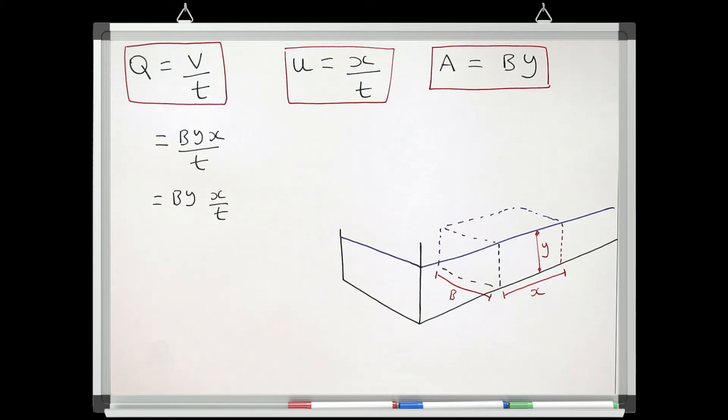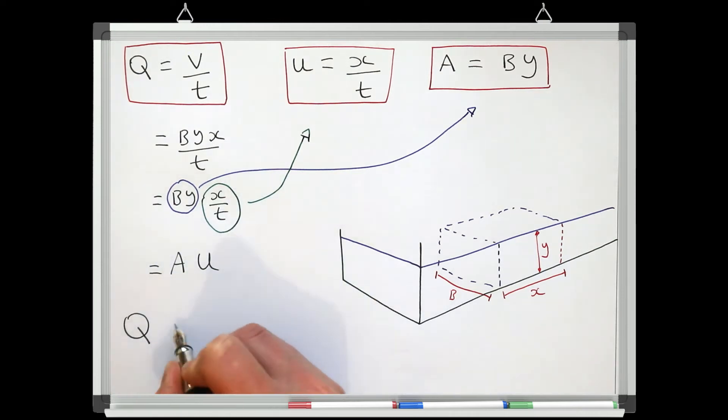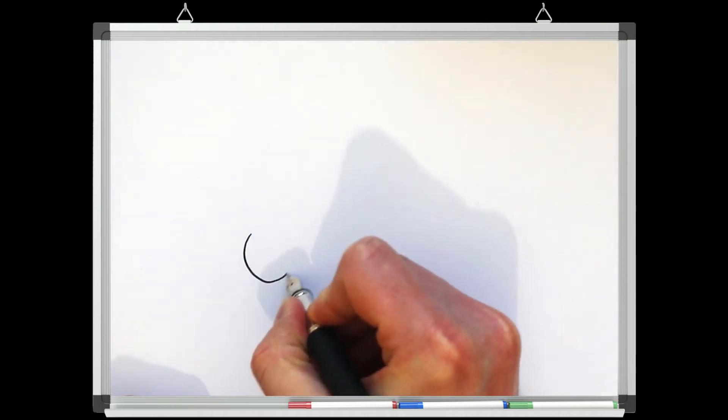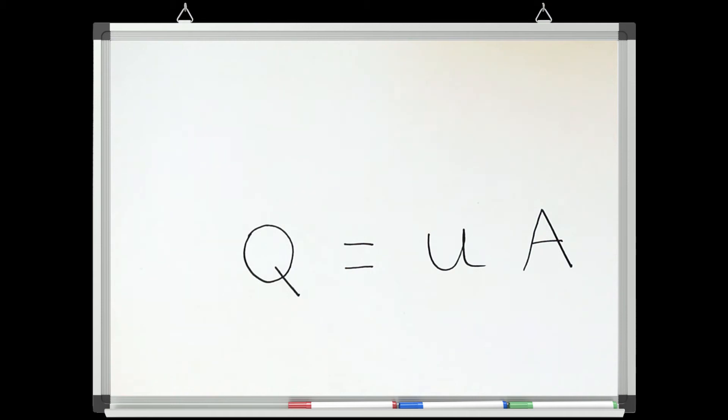If we look at this equation, we can clearly see that the first half is the same definition as the definition of cross-sectional area, and the second half is the same definition as velocity. So we can actually redefine our discharge as cross-sectional area times by velocity. This is possibly the single most important equation in hydraulics, and we will use it almost continuously throughout almost every lesson that will follow. So if you want to make progress with hydraulics, you need to have Q equals UA firmly ingrained in your mind.